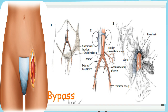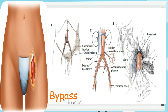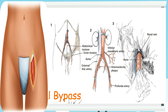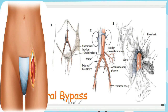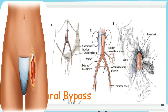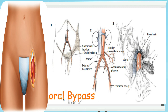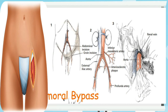Figure 2 demonstrates typical aortoiliac occlusive disease. The aorta is freed by entering the retroperitoneal space. The posterior peritoneum is divided and the duodenum is mobilized until the renal vein is identified. Sharp and blunt dissection is then used to clear the aorta on its anterior, lateral, and medial surfaces.